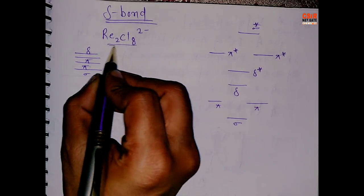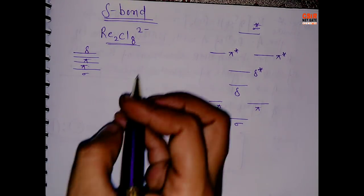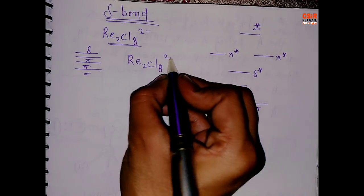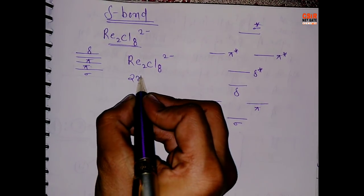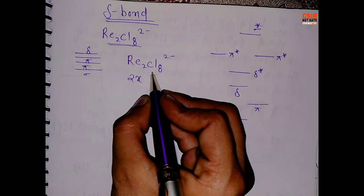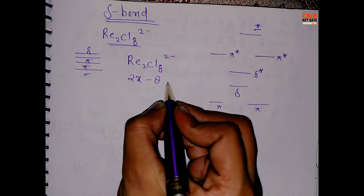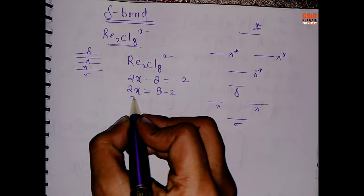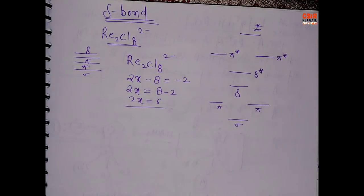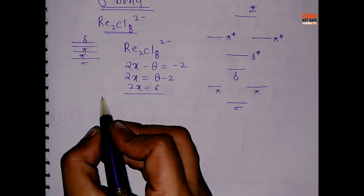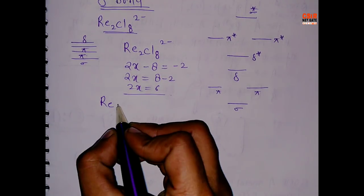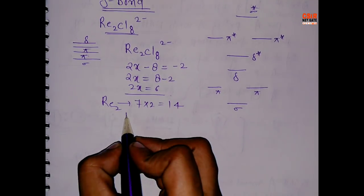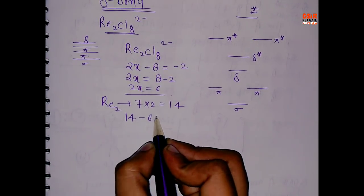Now let's calculate for Re₂Cl₈²⁻. First, find the oxidation state of Re — let's call it x. So 2x, and chlorine has a −1 charge, giving −8, equals −2. So 2x = 6. Rhenium has 7 valence electrons, so 7 × 2 = 14. Then 14 − 6 = 8.